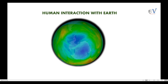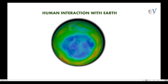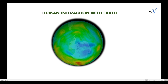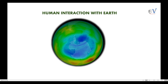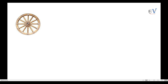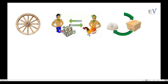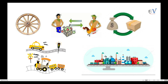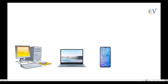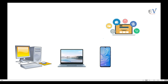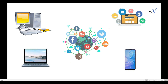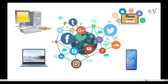Human interactions have changed the world and its environment. Early humans adapted themselves to their surroundings, but now human beings change the environment according to their needs. From the advent of the wheel to the barter system, commercial exchange of goods, the industrial revolution, transportation, and now the age of information — social media is uniting the world, but the downside is the amount of electricity consumed and its effect on global warming.